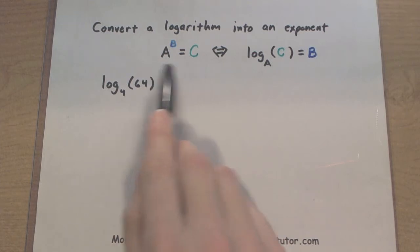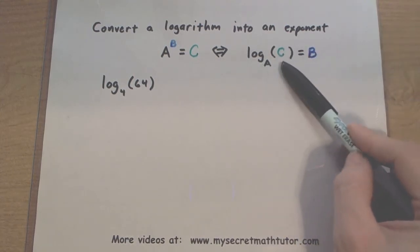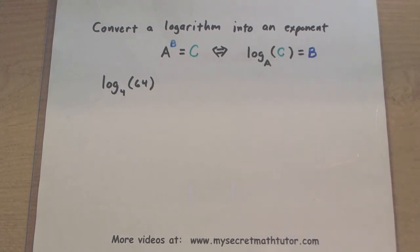So on the left side, this represents the exponent, so A to the power of B is equal to C. And when it gets converted into a log, this becomes log base A of C is equal to B.